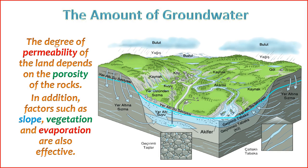The amount of groundwater is influenced by various factors, including: 1. Recharge rate — the rate at which water enters the aquifer, typically from precipitation or surface water. High recharge rates increase groundwater levels. 2. Topography — the slope and elevation of the land affect the movement and accumulation of groundwater. Water tends to flow downhill and accumulate in lower areas.